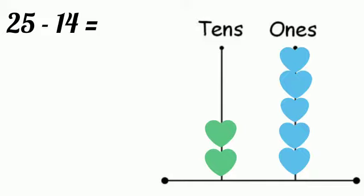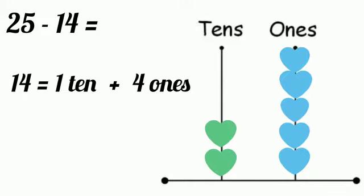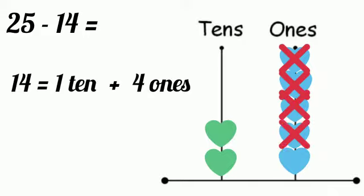Now, we should subtract 4 from 5 and 1 from 2 according to its place value. Because, in 14, 4 is in the place of ones and 1 is in the place of tens. So, from that 5 beads, we should cross out 4. 1, 2, 3, 4. How many left over? Yes, 1. That one we should write here.